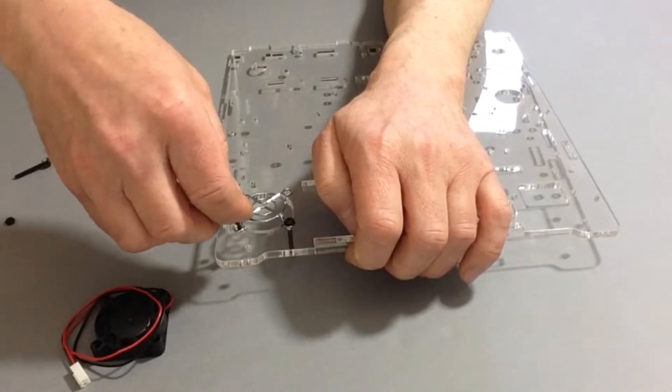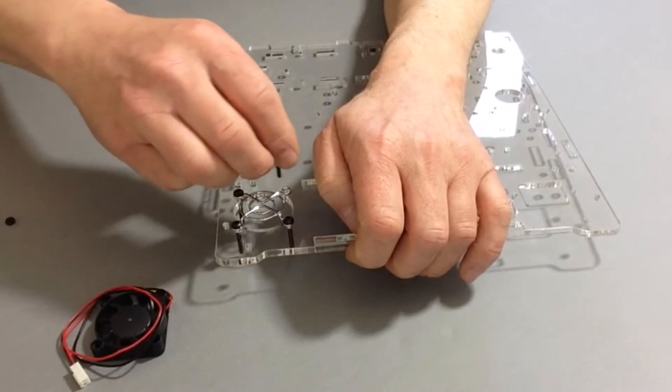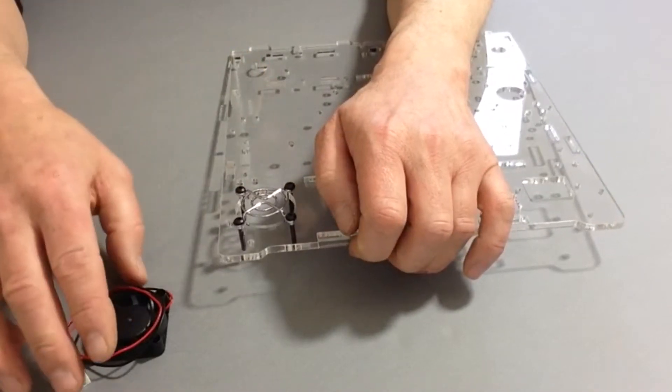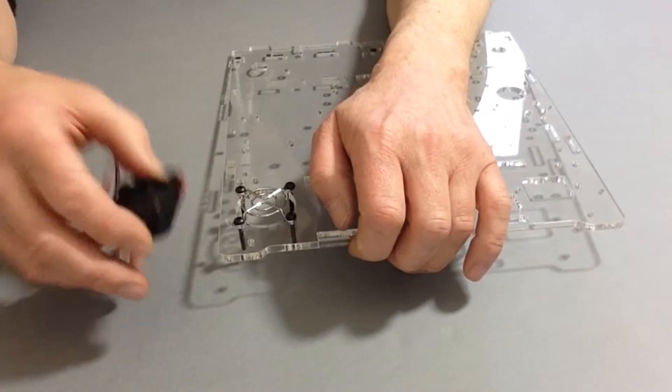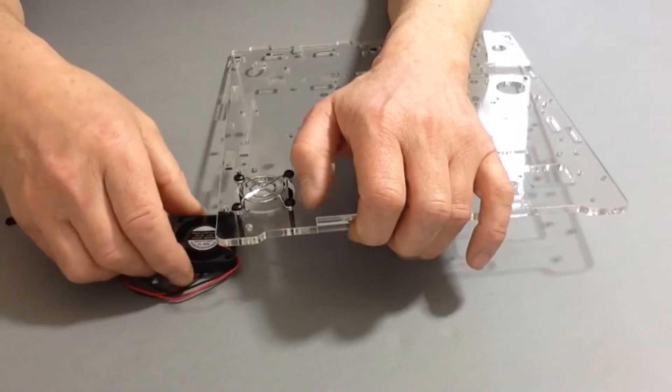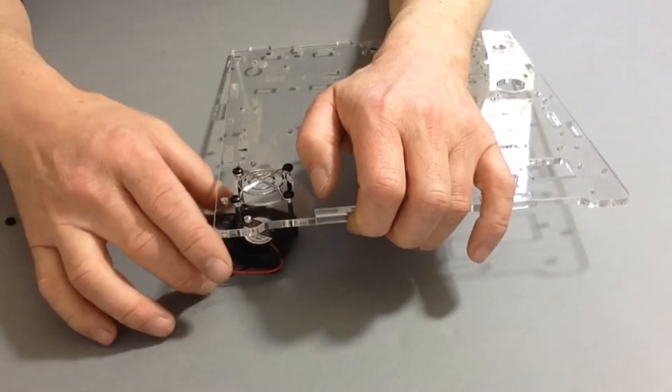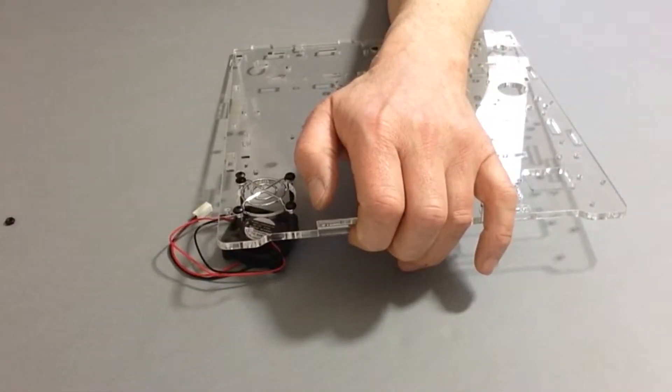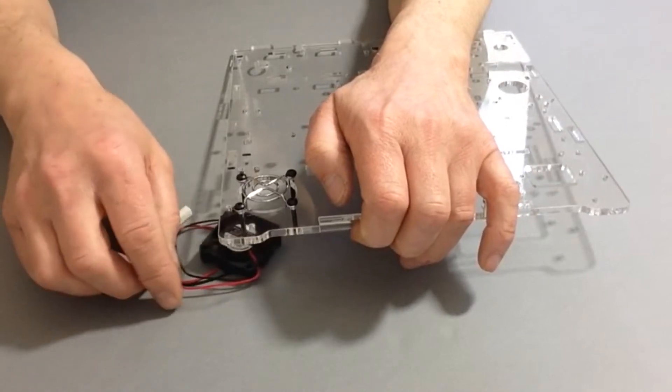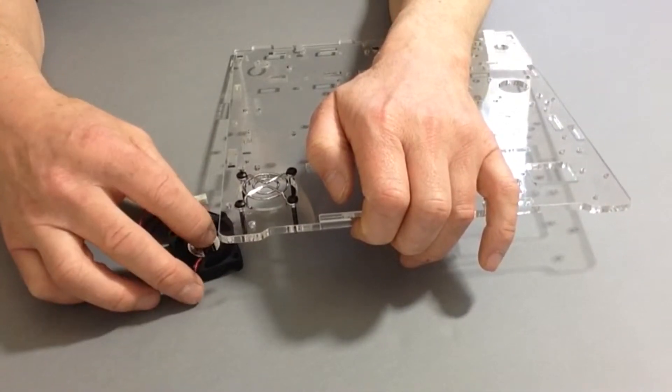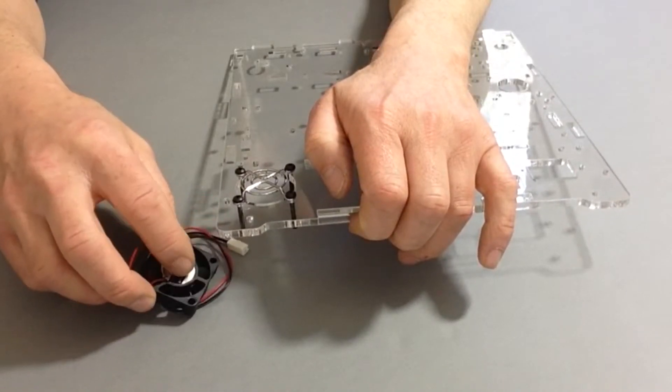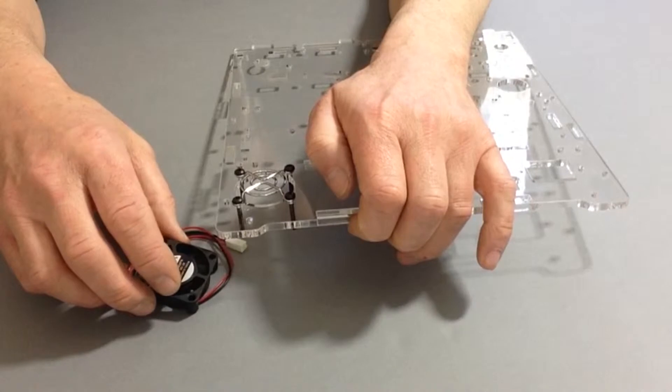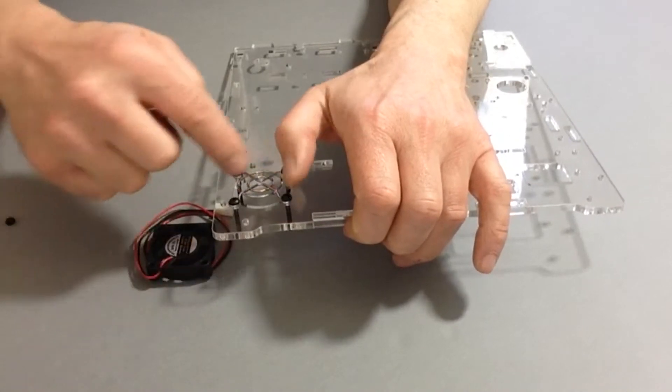Now we're going to place the fan. You need to make sure the orientation is correct - the label should be facing towards the chrome on that side.